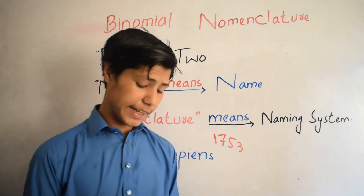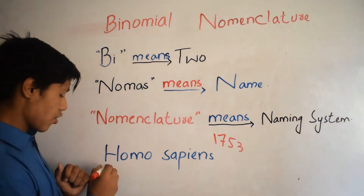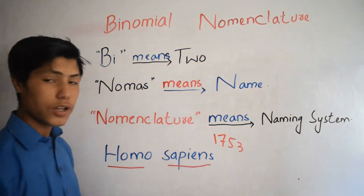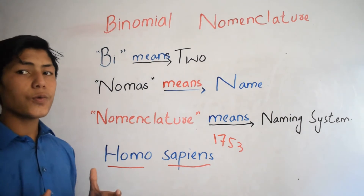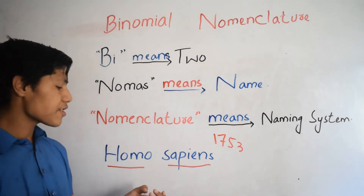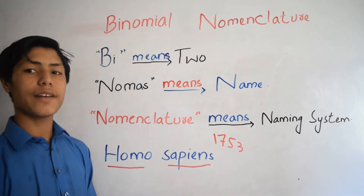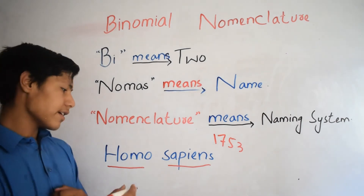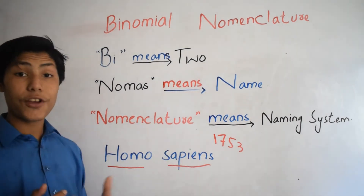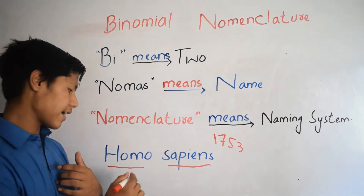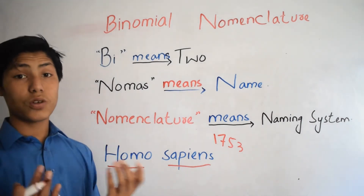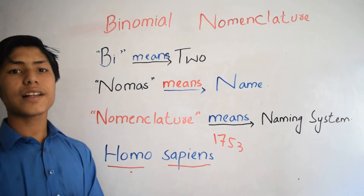Let's take the example of homo sapiens. Homo sapiens is basically human — this word is the scientific name of human, and it is taken from the Latin world. This was the first rule of binomial nomenclature.